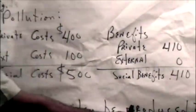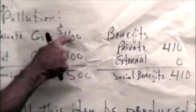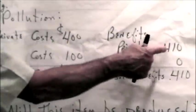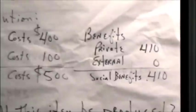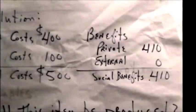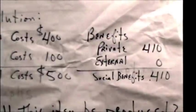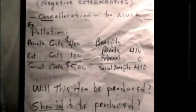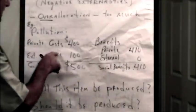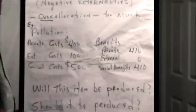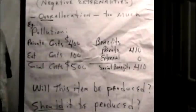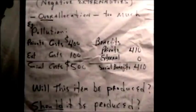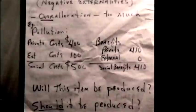Same questions. Will this item be produced? Yes. Because the private costs are $400 and the private benefits, that is whoever is going to buy it from me, is willing to pay me $410. That's what I will get for it. So, I will produce it. But, should it be produced? Not from the society's point of view because the social costs are $500 but the benefits to someone are only $410. So, it shouldn't be. I know. It's a terrible problem.